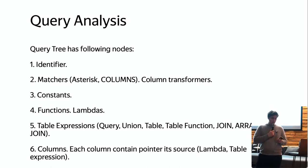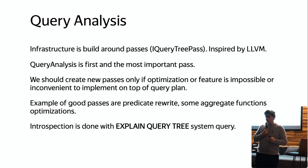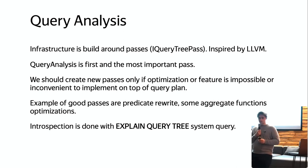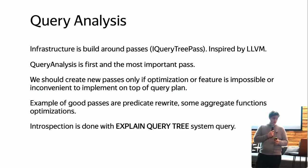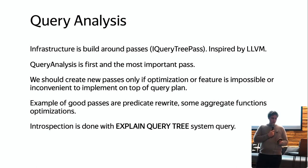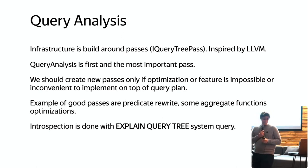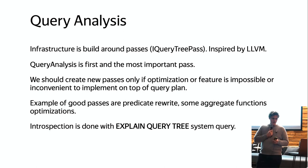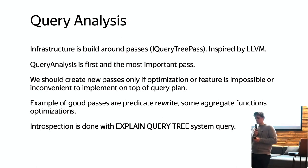The second most important thing is passes. Our infrastructure is built around passes — the class IQueryTreePass, inspired by LLVM infrastructure. Query analysis is the first and most important pass. New passes should only be created if an optimization cannot be implemented on top of the query plan. Examples of good passes are predicate expression optimizations and aggregate function optimizations. Introspection can be done using the EXPLAIN QUERY TREE system query.